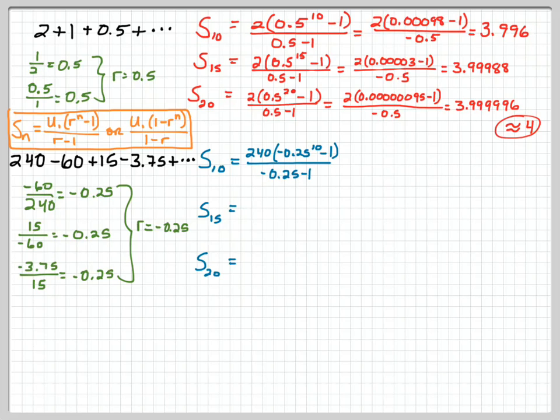240, negative 0.25 to the 10th power, the denominator, plug it all in, and we get 240 times 0.0000095 minus 1 over negative 1.25. So you'll probably recognize that that 240 is going to be multiplied by a very small negative number, but then we're going to divide by a negative number, so we're going to come out with 191.998.